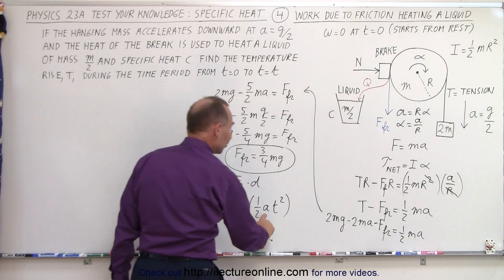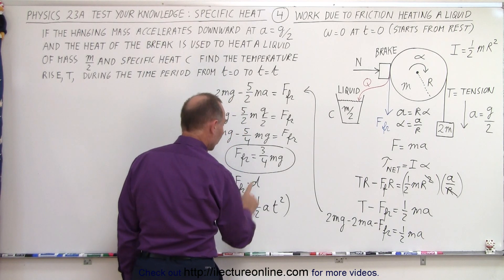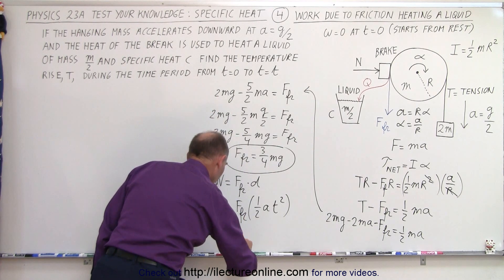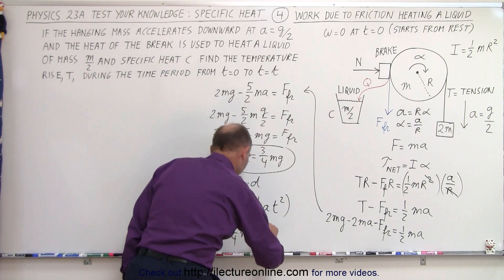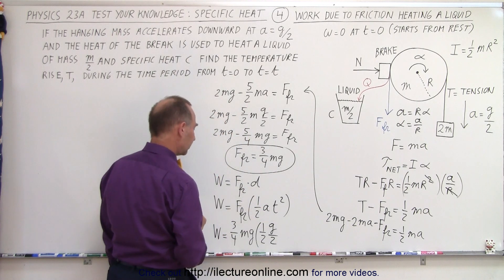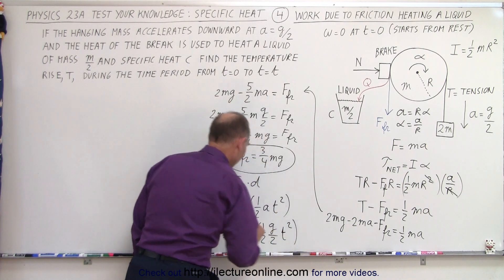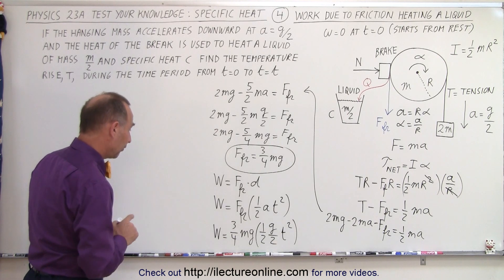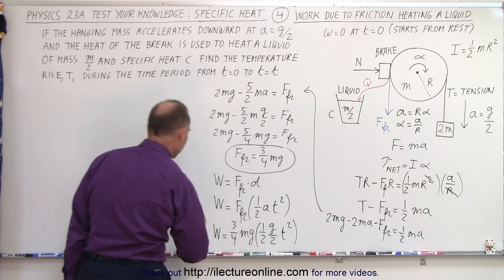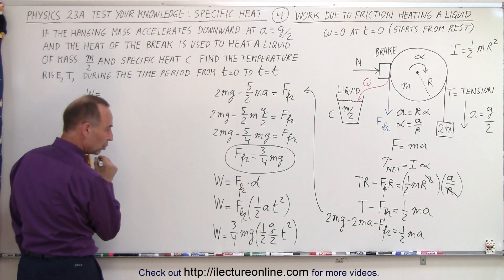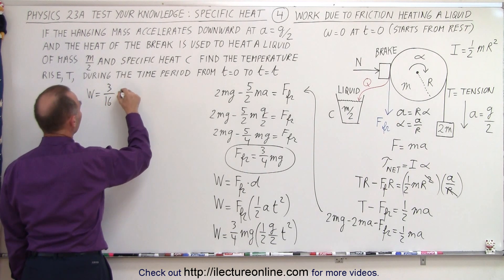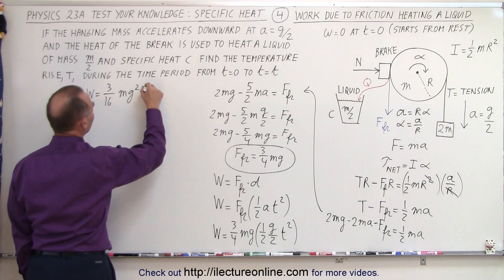Now we plug in what a is equal to — g over 2 — and what the friction force is. The work done equals the friction force, which is 3 quarters mg, times one half, times the acceleration g divided by 2, times t squared. We have g squared, and 4 times 4 is 16, so the work done equals 3 sixteenths mg squared t squared.